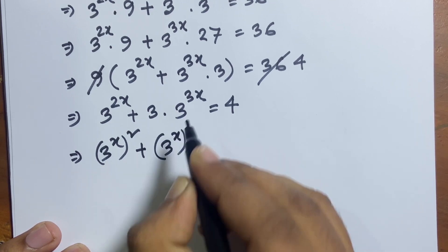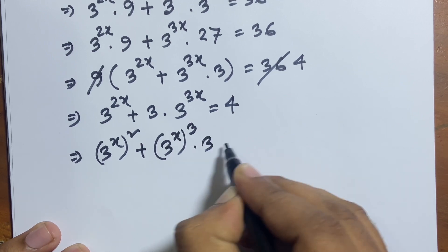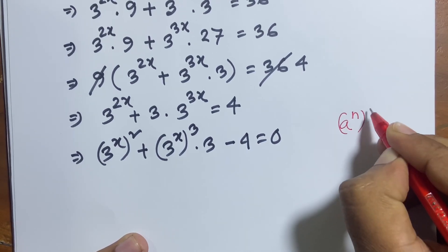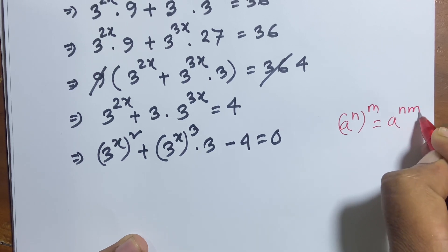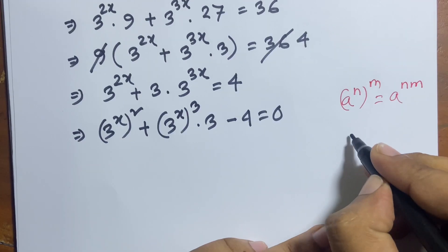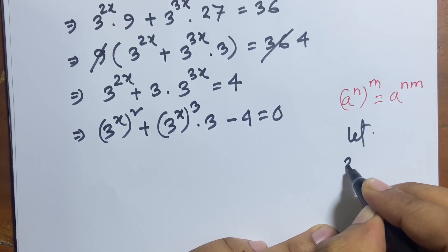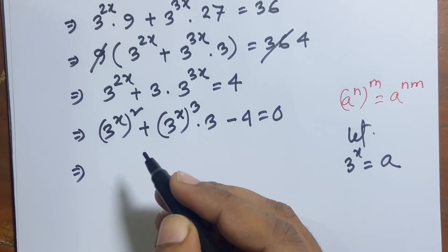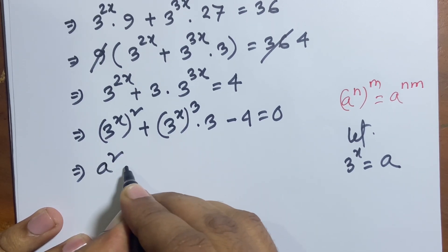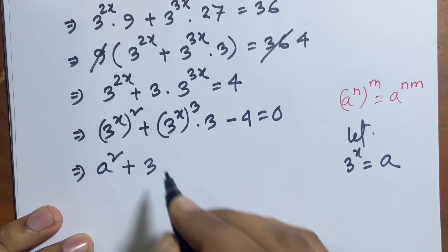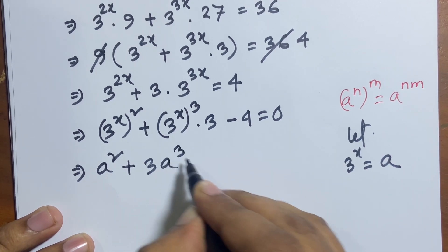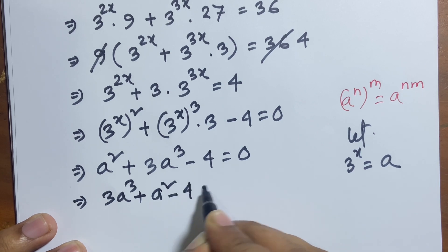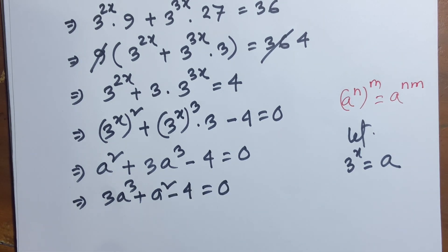I follow the formula a to the power (m times n) equals a to the power mn. Now let 3 to the power x equal to a. I can see easily: a squared plus 3a cubed minus 4 equals zero, since 3 power x equals a. So 3a cubed plus a squared minus 4 equals zero.